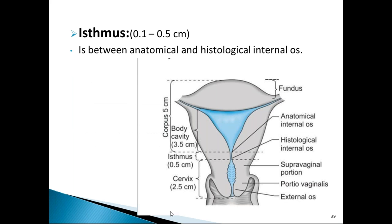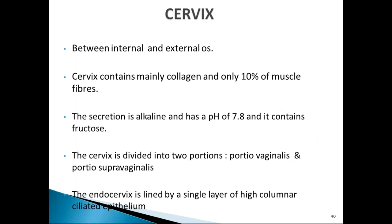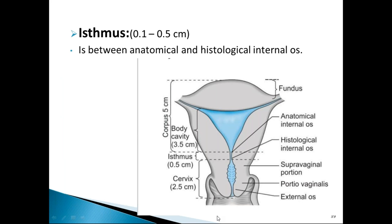The isthmus is a small portion between the anatomical and histological internal os. The anatomical internal os is the first constriction from the uterine cavity to the cervix. The histological internal os is where the histology changes from endometrial to endocervical lining, visible on microscopic examination. The isthmus forms the lower uterine segment in later pregnancy.